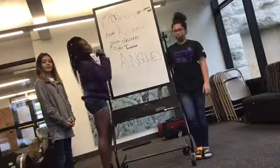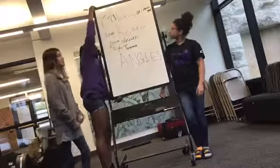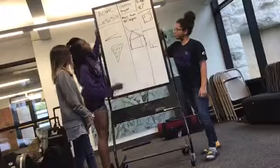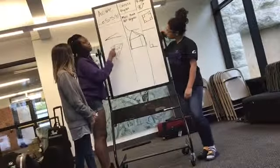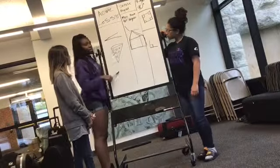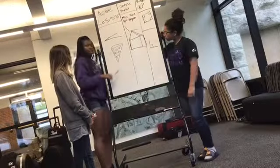Today we're going to be talking about acute angles. Acute angles are less than 90 degrees. There's two examples. Like a pizza slice is less than 90 degrees.